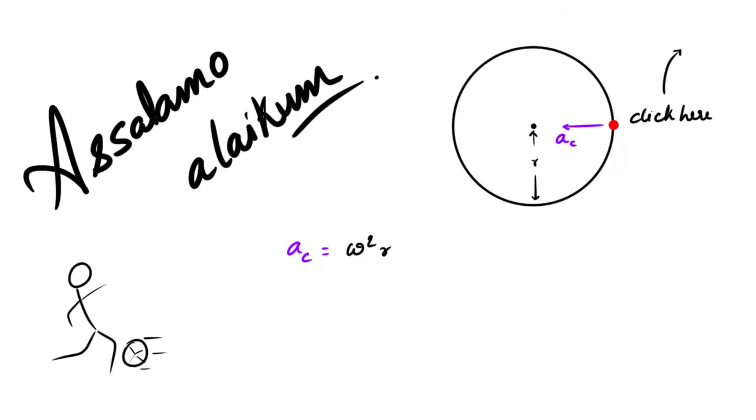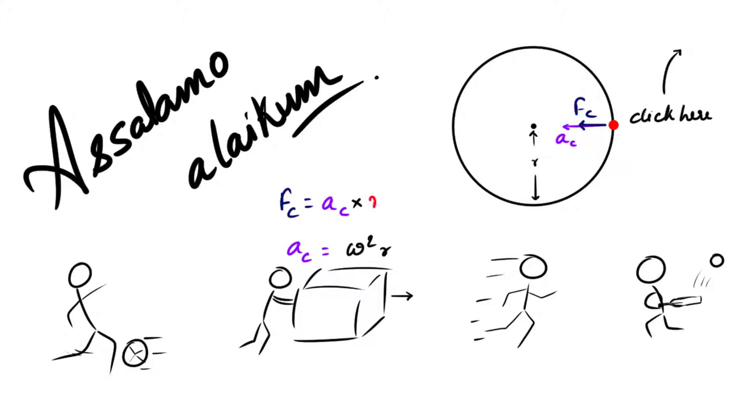But then from Newton's second law of motion you might already have in your minds that in an inertial reference frame every acceleration is caused by some force, and so should be the case with the particle following the circular path, which should have a value equal to the product of the centripetal acceleration and mass of the particle. This force is known as a centripetal force.